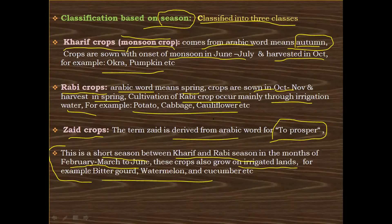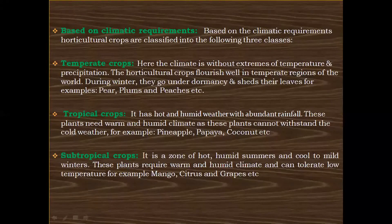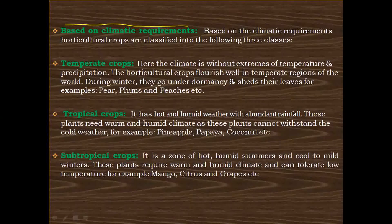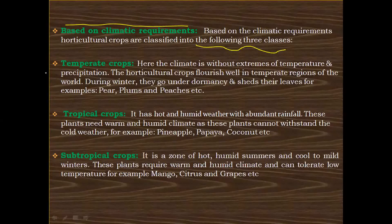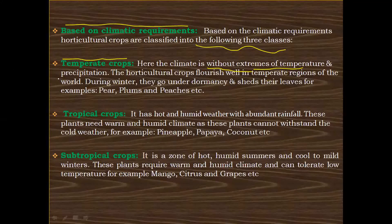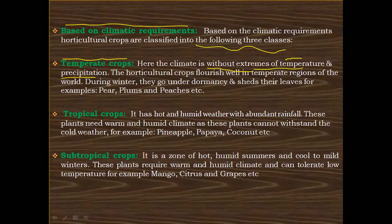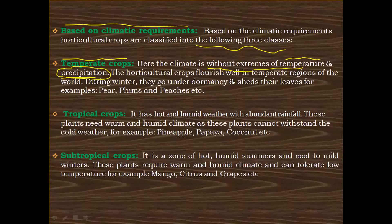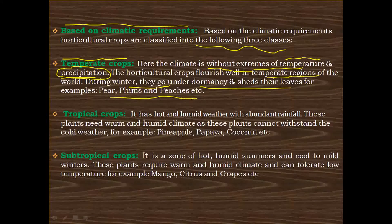The next classification of horticulture crops is based on climatic requirement. Based on climatic requirement, they are classified into three classes. The first one is temperate crops, which are cultivated in the temperate region. The climate in the temperate region is without extremes of temperature and precipitation — the temperature is neither very low nor very high, and precipitation is not very abundant. These crops flourish well in the temperate region, and during winter they go into dormancy and shed their leaves. For example, pear, plums, and peaches.